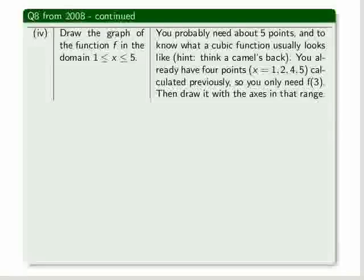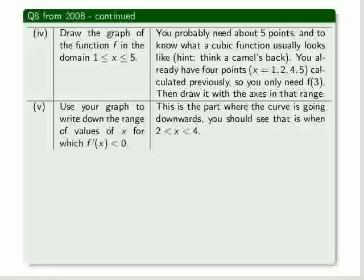Draw the graph of the function f of x in the domain 1 to 5. Well, you've already worked out some values of f of x for that range, and then you know what the shape is like, so you can draw it quite easily. And then, to find when the derivative is less than 0, well, that's when it's going downwards, and you should find that that happens between 2 and 4.